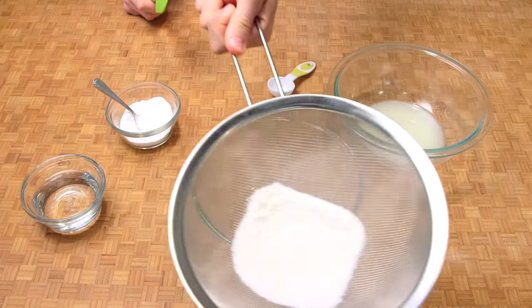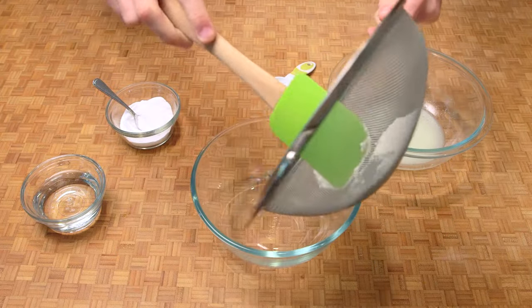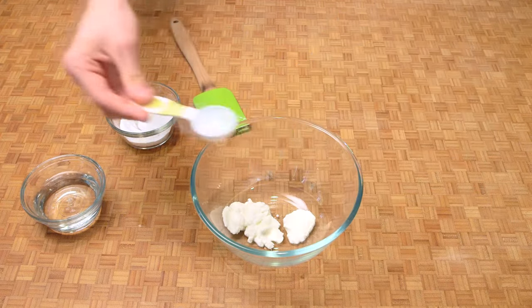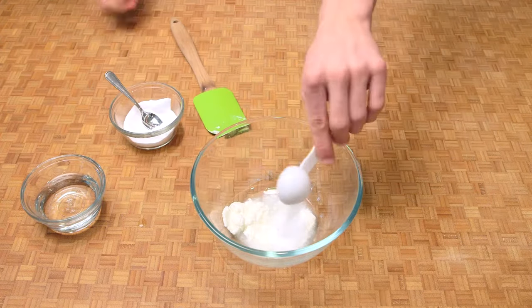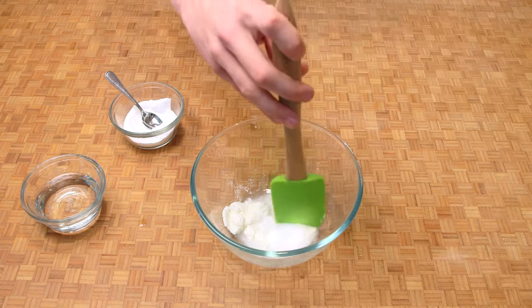See? What you have left are the curds. Dump those into a bowl. Now you add about a tablespoon of water and a tablespoon of baking soda to the curds. Give that a stir.